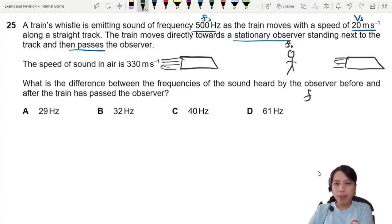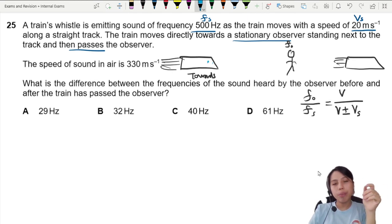So we can say that is f observer over f source equals speed of sound over speed of sound plus minus the speed of the source. How do you know when to use positive or negative? If the train is moving towards you, or the source of sound, this train will make the sound moving towards you, then that is when you will use negative.